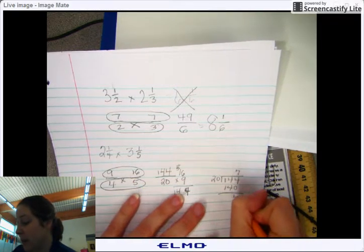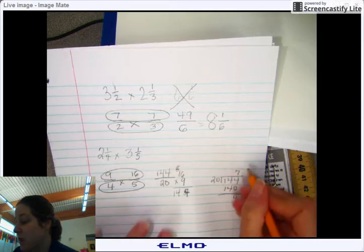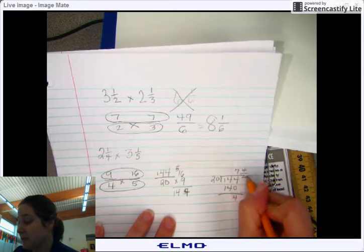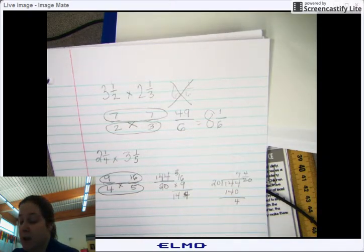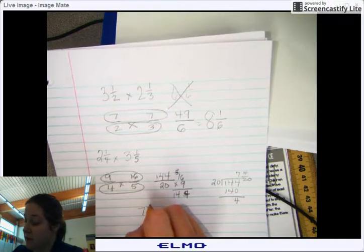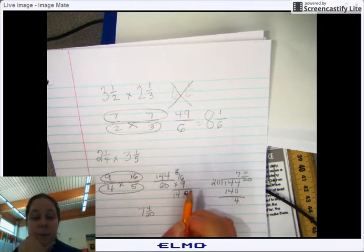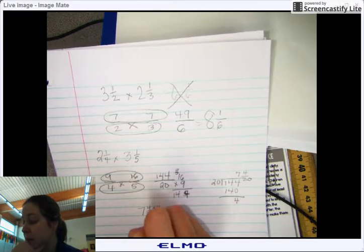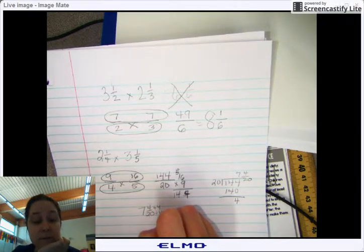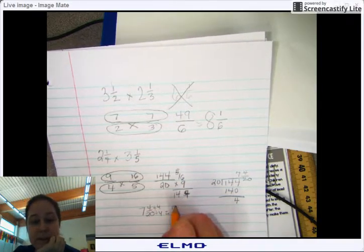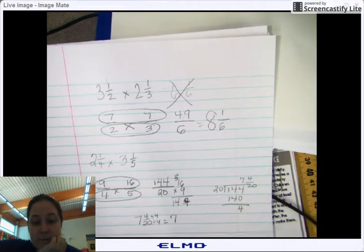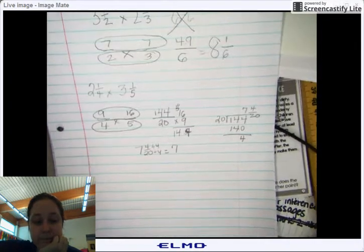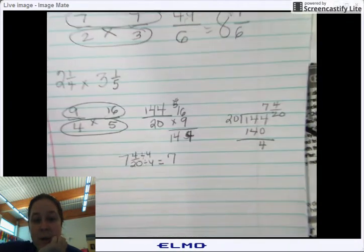Excuse me. With 4 left over. With 4/20. So the answer is 7 and 4/20. But 4/20 can be reduced by 4, equaling 7 and ⅕.